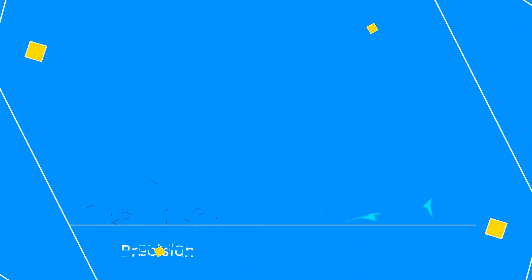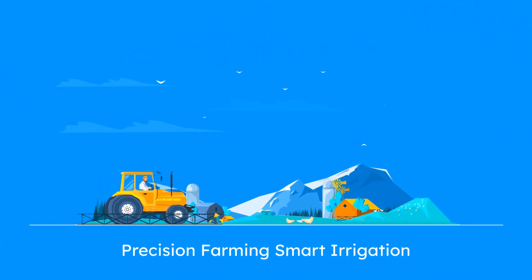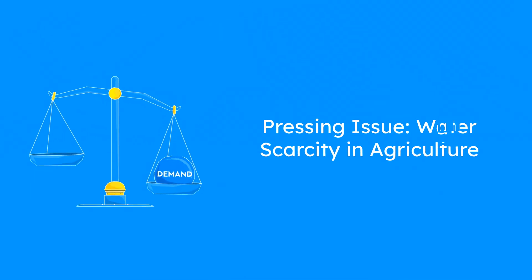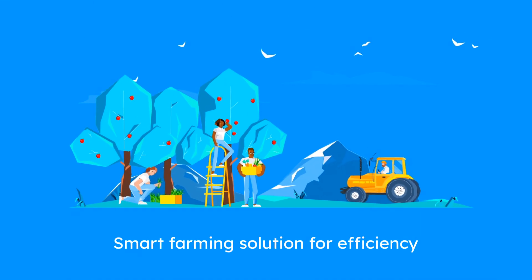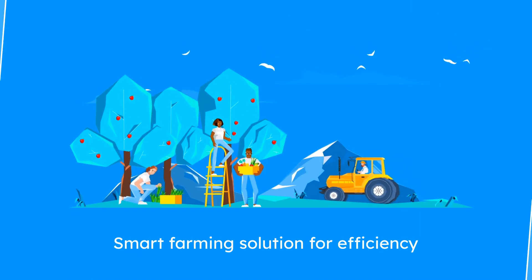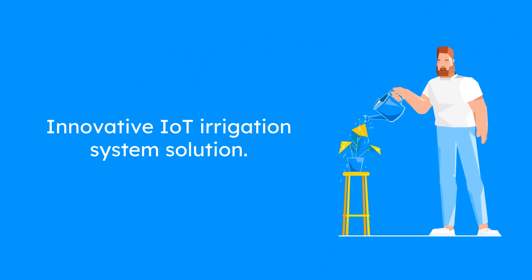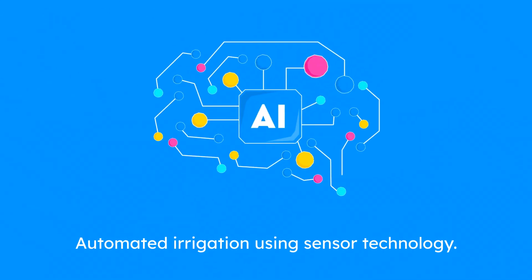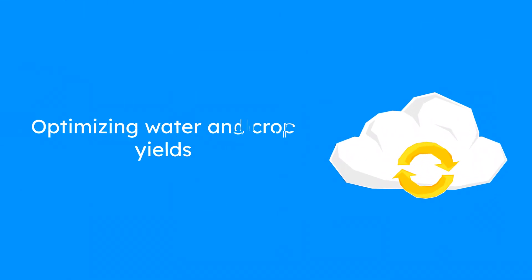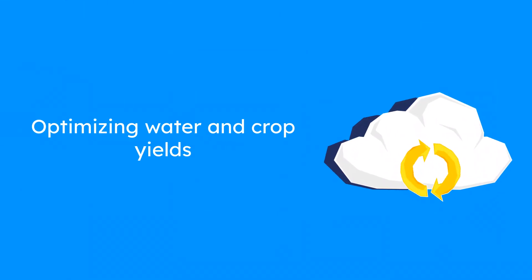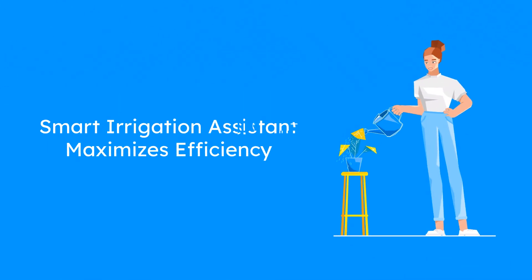SIH 554 Smart Irrigation System for Precision Farming. Water scarcity in agriculture is a pressing issue, and this project provides a smart solution to enhance farming efficiency and sustainability. Imagine a cutting-edge irrigation system powered by IoT technology that uses sensors to monitor soil moisture and weather conditions, integrating machine learning and edge computing to automate irrigation. It will provide real-time data and recommendations to optimize water use and improve crop yields — like a smart irrigation assistant that ensures every drop of water counts.